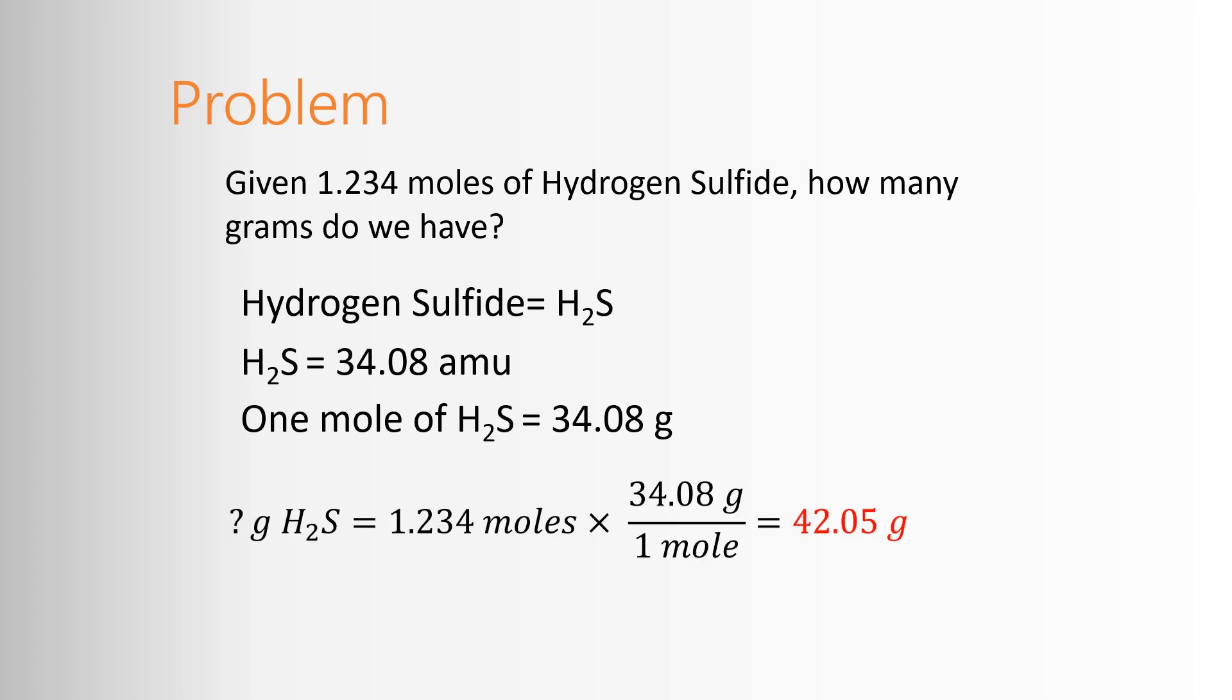That means that one formula unit of H2S is 34.08 AMUs, and one mole of H2S is 34.08 grams. We'd set up a dimensional analysis. If I want to figure out the grams of H2SO4 and I have 1.2340 moles of H2SO4, I would need moles on bottom. So the 34.08 grams goes on top, moles go on bottom, moles cancel. This times this gives me 42.05 grams. I'm bounded to four significant figures because there's four significant figures in my original data.